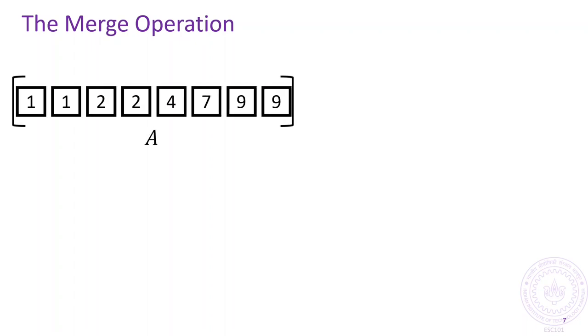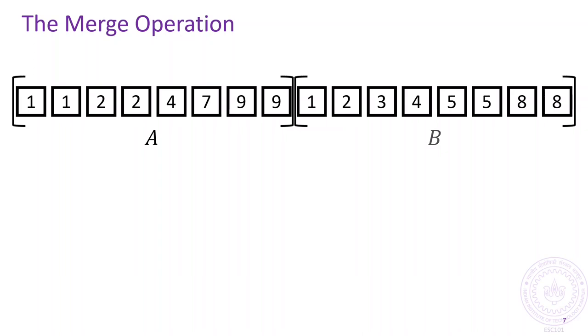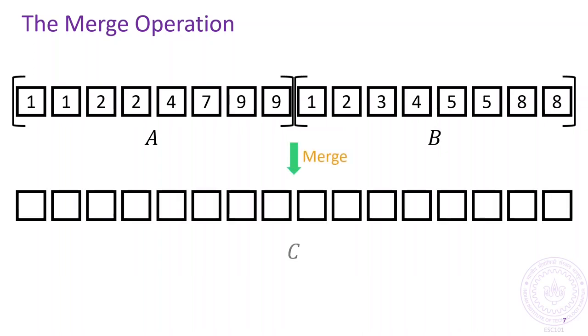To understand the merge operation better, let's take an example. Here are two arrays, both with eight elements each, both sorted in increasing order, and here is a blank array c which we will fill with the elements of the arrays a and b. Initially, the two active regions are the entire arrays a and b respectively.